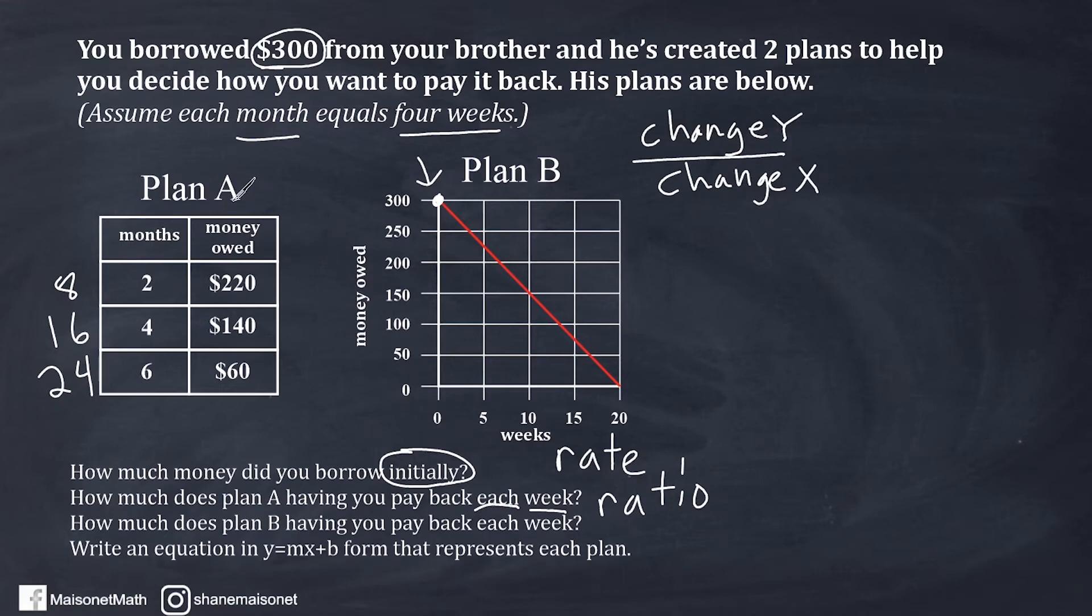So if we take a look at Plan A over here, this column right here is our X column and this column here is our Y column. And now to figure out what the rate's going to be each week, all we have to do is compare how the Ys are changing from one Y to the next, and then compare all the corresponding Xs are changing. I already converted these months to weeks. So let's compare eight to 16. If we take a look at 220 and 140, we would say that this dropped by $80. And if we take a look at eight weeks to 16 weeks, that is a change in eight weeks. So as a ratio, we would say that the change in Y was negative 80 because the amount owed went down 80, and that was over an eight week period.